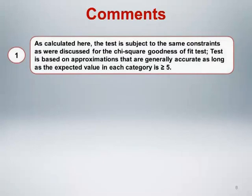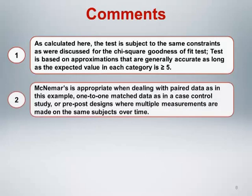A few comments about this test. As calculated here, the test is subject to the same constraints as were discussed for the chi-square goodness of fit test. The test is based on approximations that are generally accurate as long as the expected value in each category is greater than or equal to 5. McNemar's test is appropriate when dealing with paired data as in this example, one-to-one matched data as in a case-control study, or pre-post designs where multiple measurements are made on the same subjects over time.